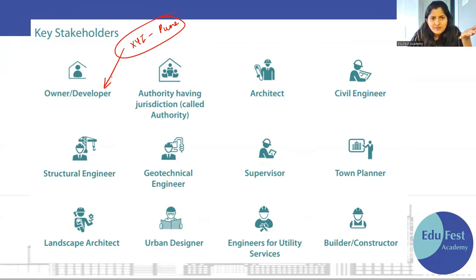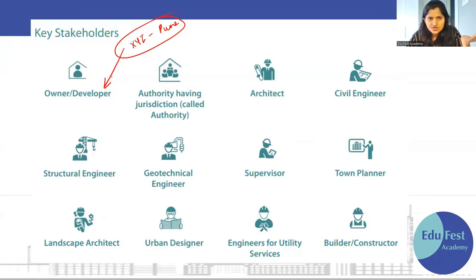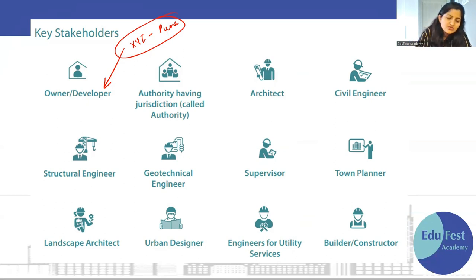Next stakeholder — authority having jurisdiction. Matlab, yeh Pune ke andar PMC mein aati hai, PCMC mein aati hai, PMRDA mein aati hai. So I have to understand the authority having jurisdiction — ki mujhe permission kis authority ke andar se leni hai. So the authority is the next stakeholder.